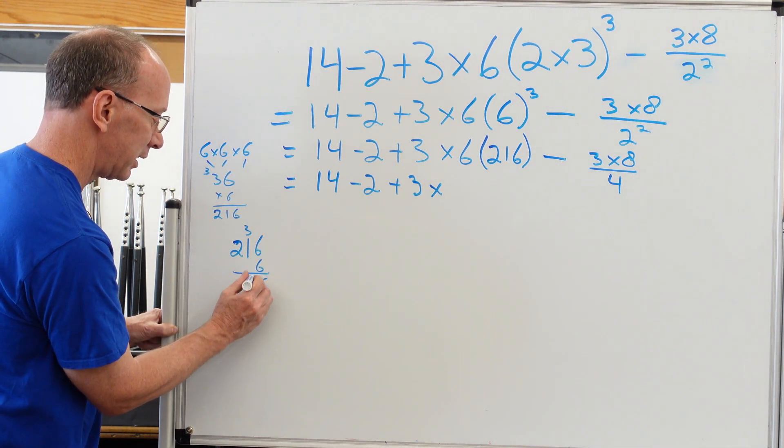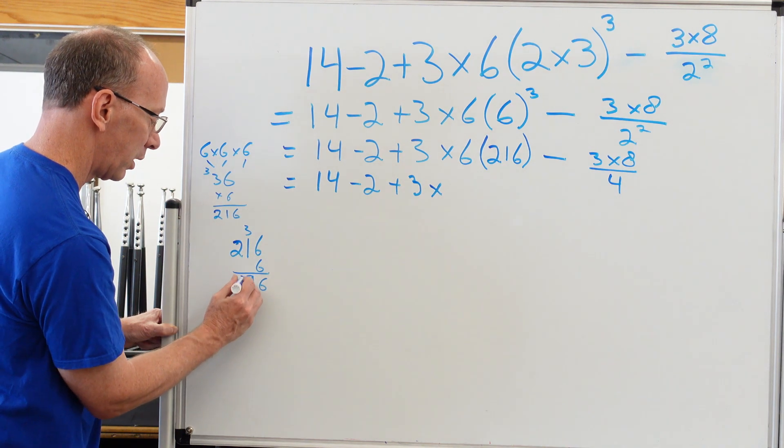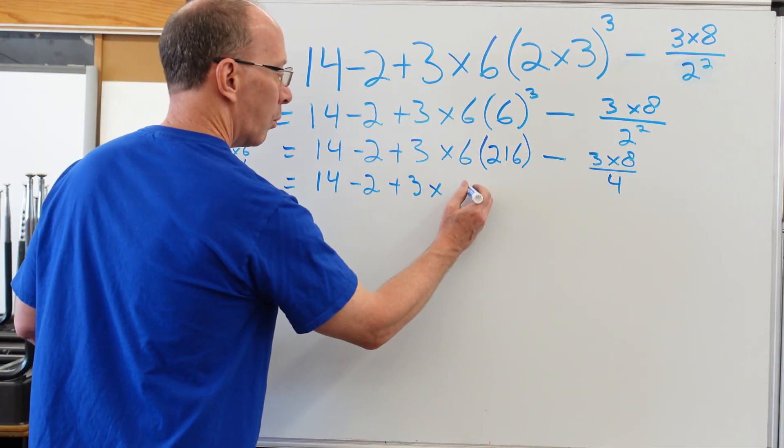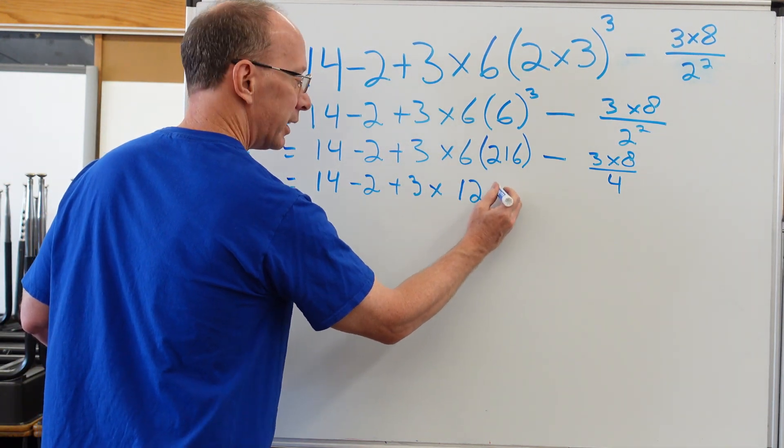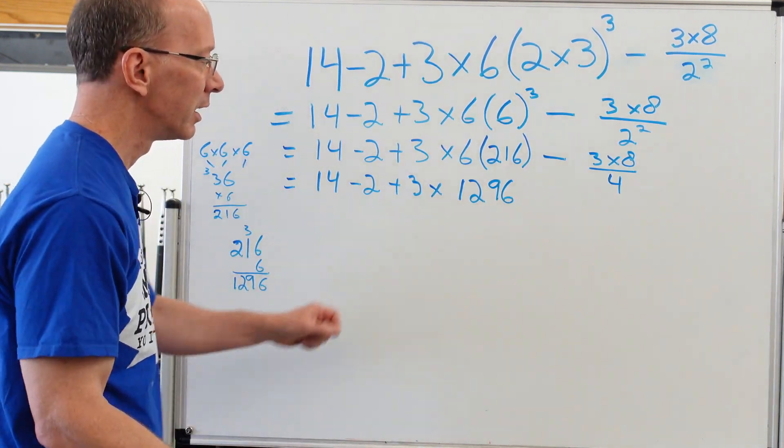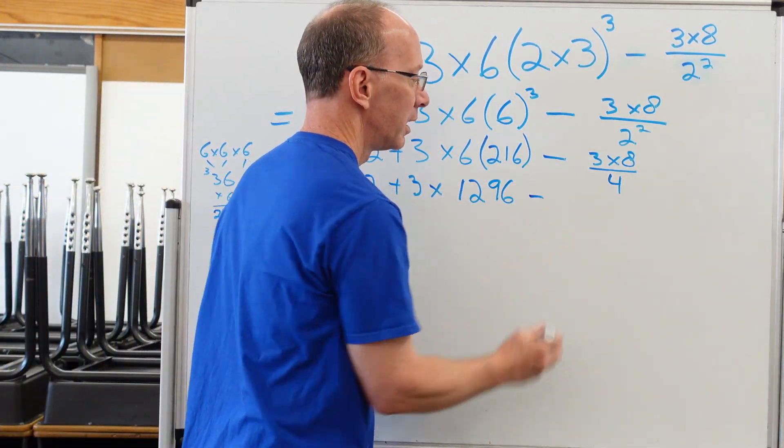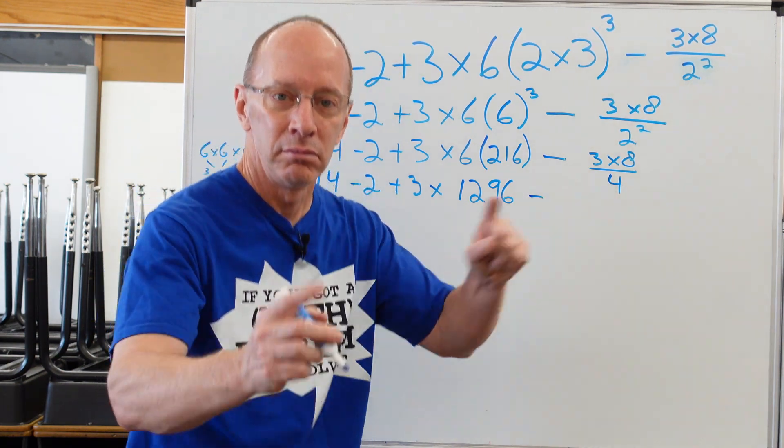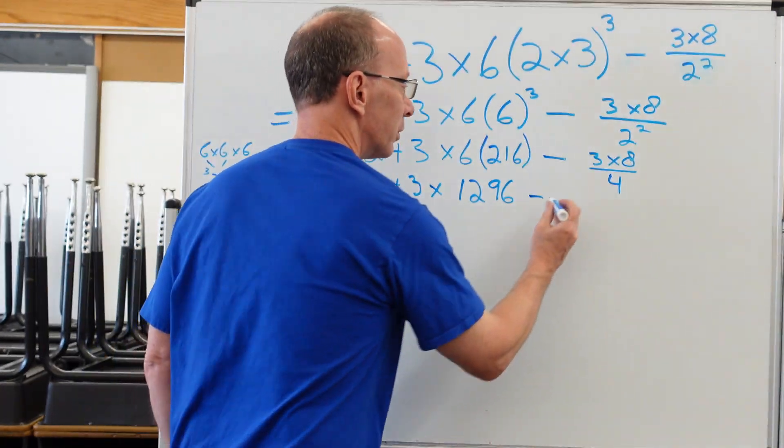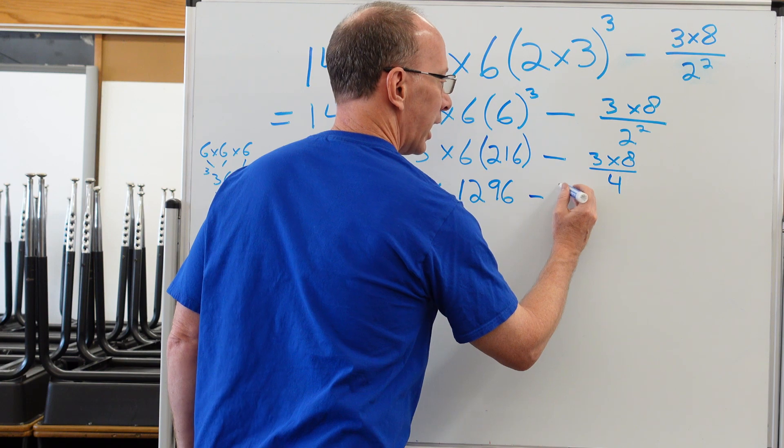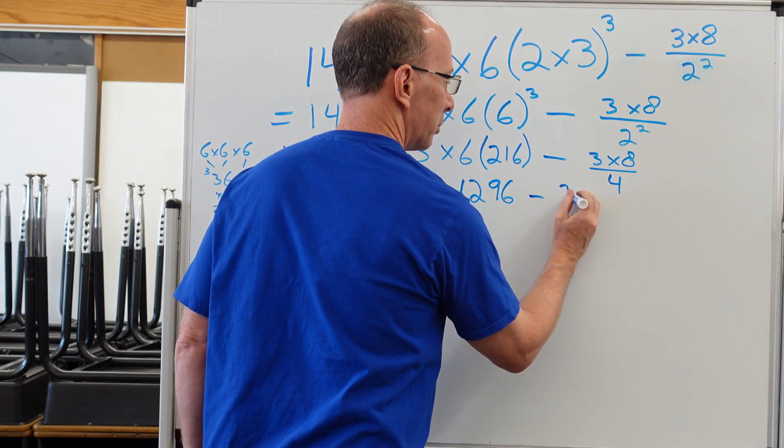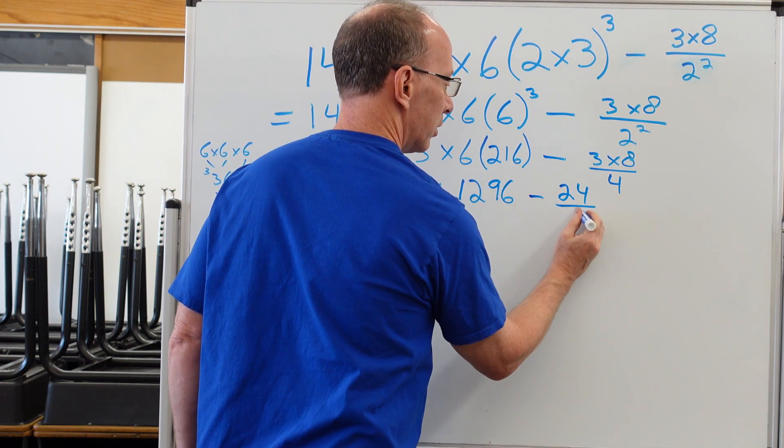And then six times two is 12. So I have 1,296. All right. Minus three times eight is 24. All right. So I have 24 right here. So I put 24 over four.